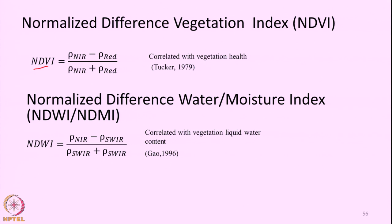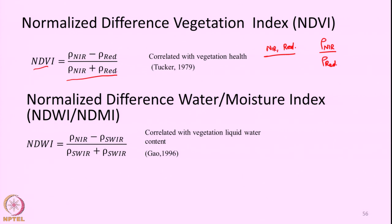One such commonly used and most useful spectral index or vegetation index is the Normalized Difference Vegetation Index, NDVI. In order to obtain NDVI we need the spectral reflectance in the NIR band and red band — the same two combinations used for the ratio spectral index. But instead of just creating a ratio of rho-NIR by rho-red, here we devise a slightly different equation: on the numerator we have the difference NIR minus red, divided by NIR plus red.